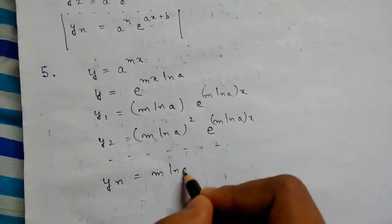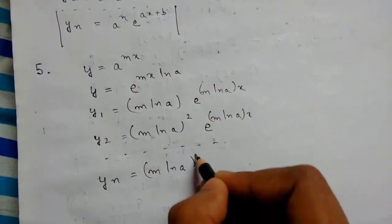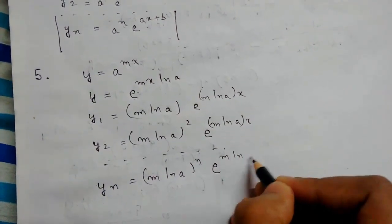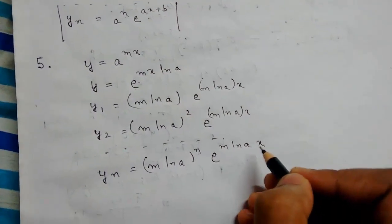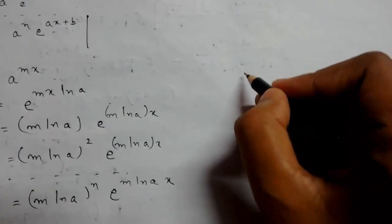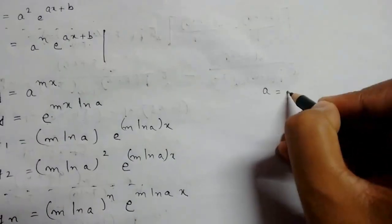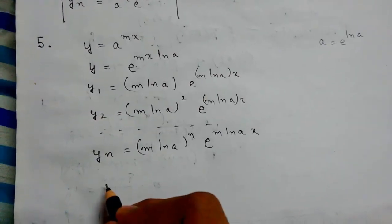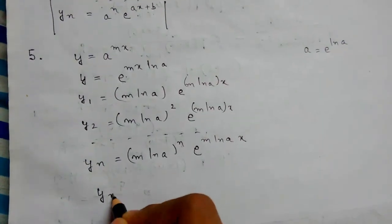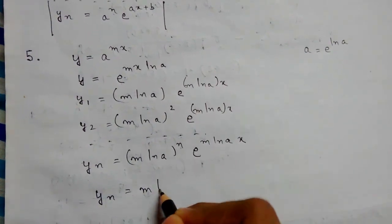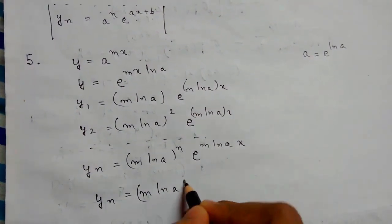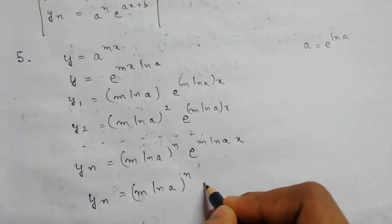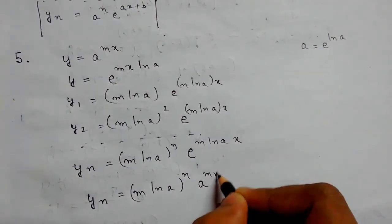Now, a equals e to the power ln a. So from there we can write yn equals m ln a whole to the power n, times a to the power mx. So this is our general formula.